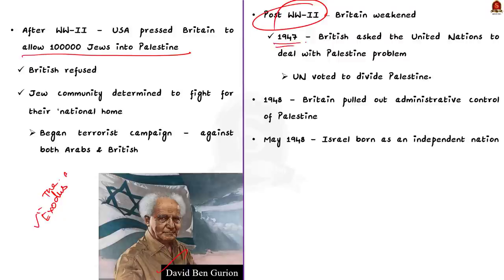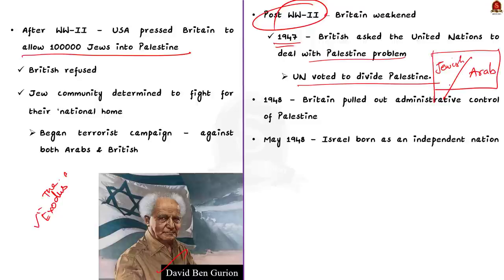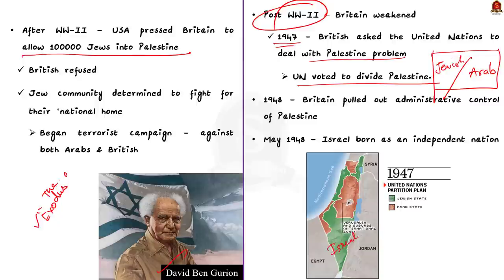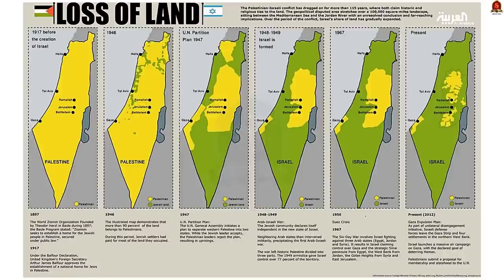By 1947, Britain asked the United Nations to deal with the problem. The United Nations that year voted to divide Palestine, setting aside roughly half of it to form an independent Jewish state. Early in 1948, the British decided to withdraw altogether and let the UN carry out its own plan. In May 1948, Ben Gurion declared the independence of the new state of Israel. Ben Gurion was given the title 'Father of Modern Israel.'